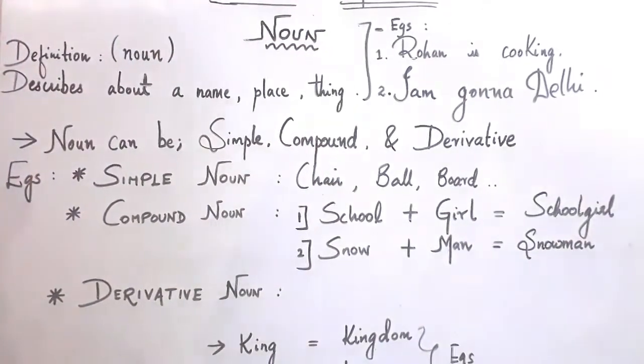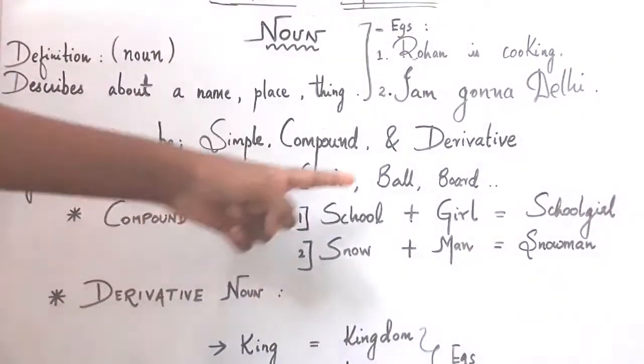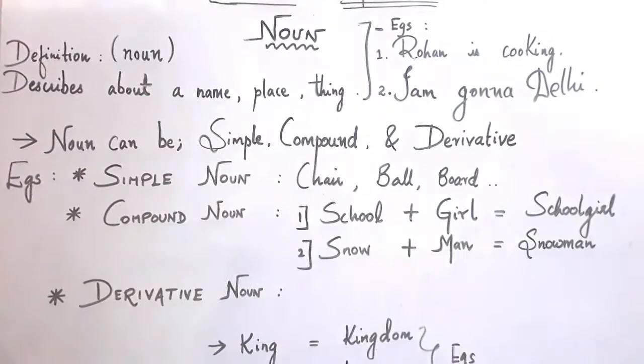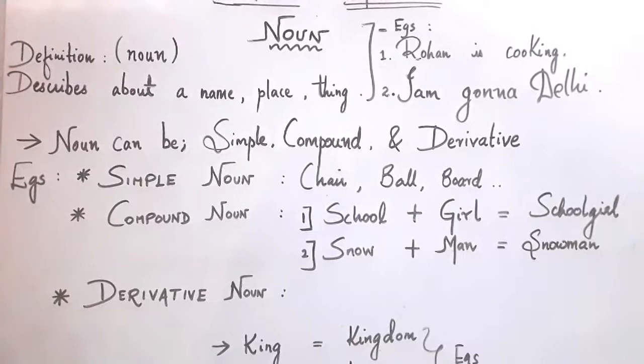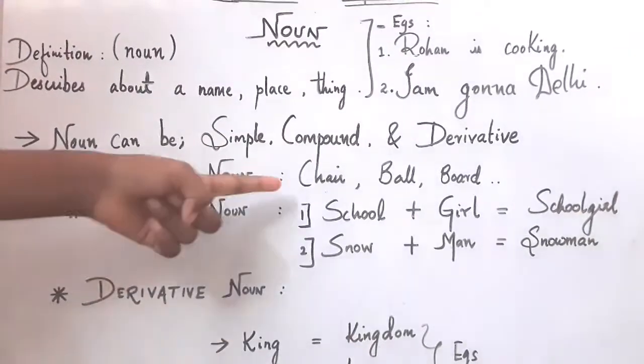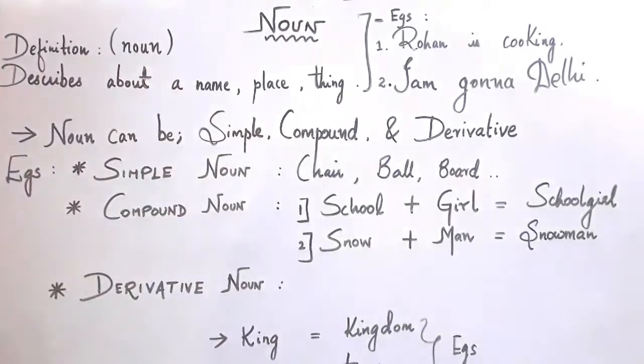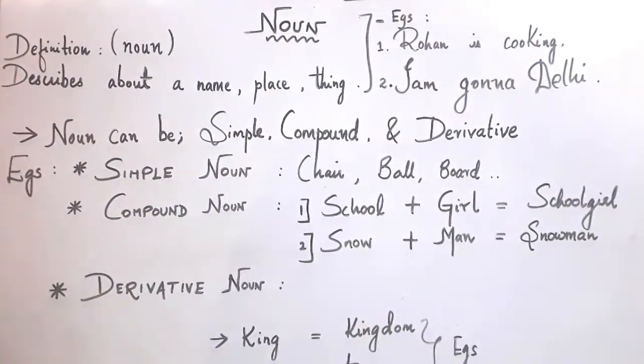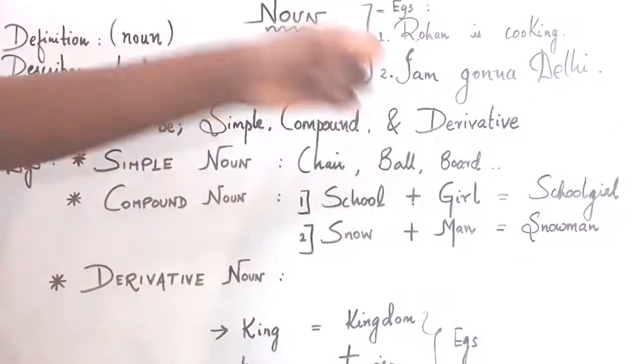Now we can see that nouns can be simple, compound, and derivative. What is a simple noun? A simple noun is something that is very common. For example, chair, ball, board. These are examples of simple nouns.